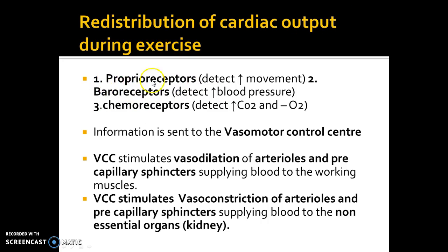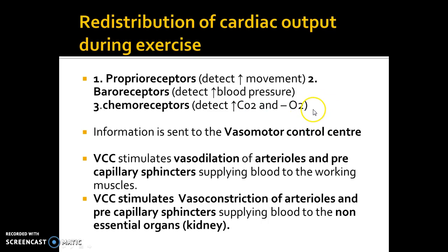The first part is the neural control section. Proprioceptors detect an increase in movement when you start to run. Baroreceptors detect an increase in blood pressure when you start to run. Chemoreceptors detect an increase in carbon dioxide and a decrease in oxygen when you start to run. These three things happen and the information is sent to the vasomotor control center, located in the medulla oblongata, as is the cardiac control center.